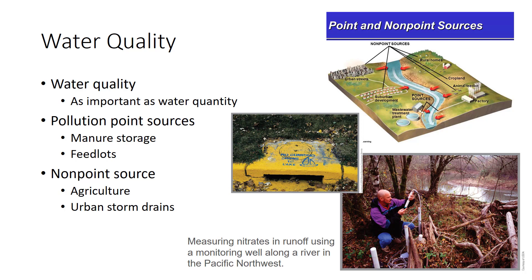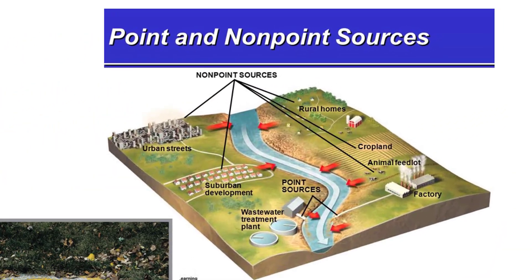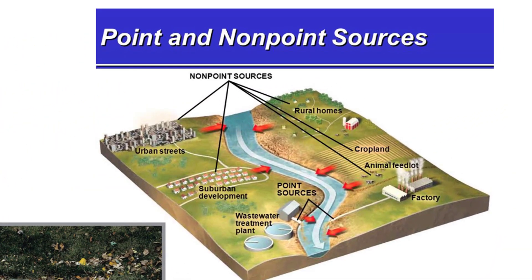Water quality is as important as water quantity. Agriculture has a special role in the preservation of our nation's water supplies. Fish kills in trout streams caused by runoff from insecticide-treated cornfields are one example. Agricultural sources of water pollution are difficult to pin down compared to a pipe coming out of a factory or sewage plant. Such point sources of pollution are relatively easy to identify, and government regulations have allowed good progress in bringing industrial and urban point sources under control. Most agriculture is a non-point source, such as farm fields — an exception being large manure storage facilities and feedlots, which are considered point sources.